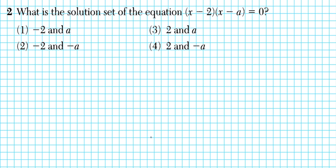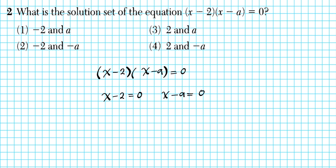Let's take a look at question 2. It says: what is the solution set of the equation (x - 2)(x - a) = 0? To solve this we use the zero product property. Since (x - 2)(x - a) equals 0, we simply set both factors equal to 0: x minus 2 equals 0 and x minus a equals 0. Solving algebraically, adding 2 to both sides gives x equals 2. In the second equation, treat the variable a like a number — adding a to both sides gives x equals a.